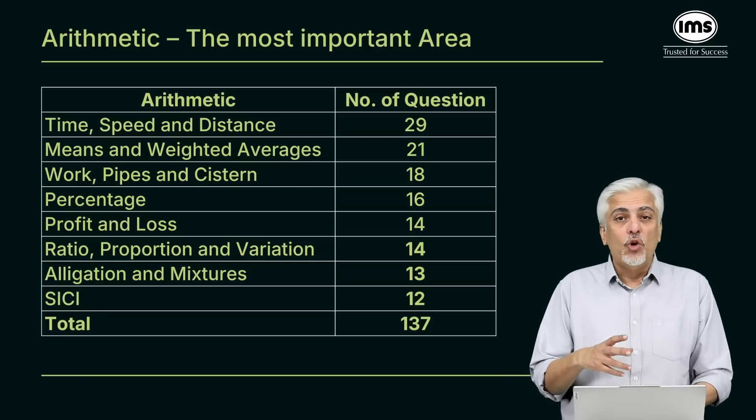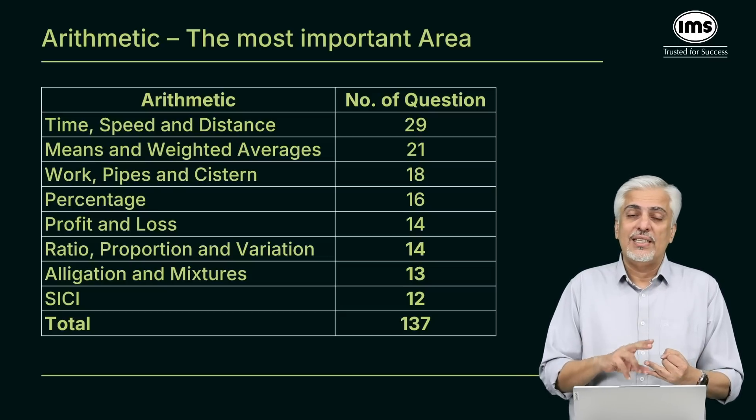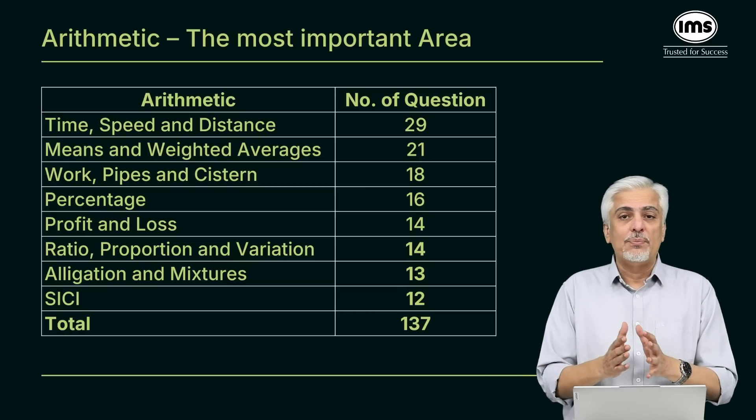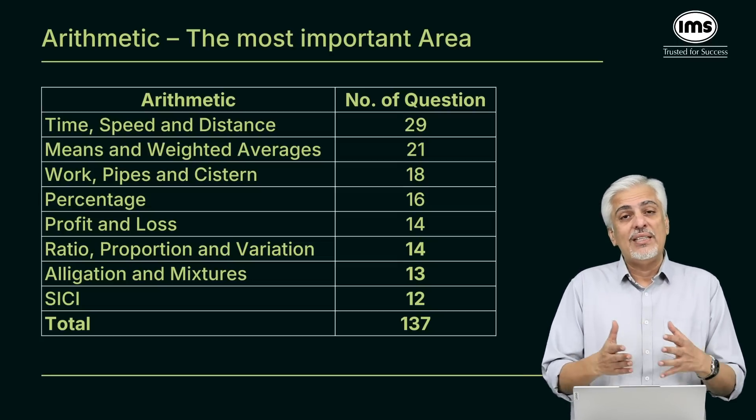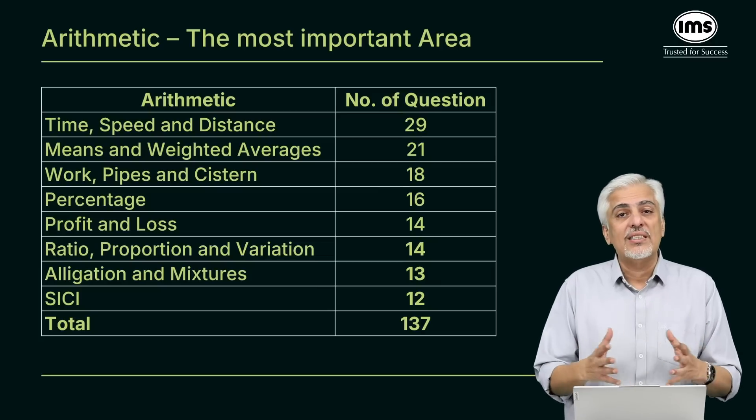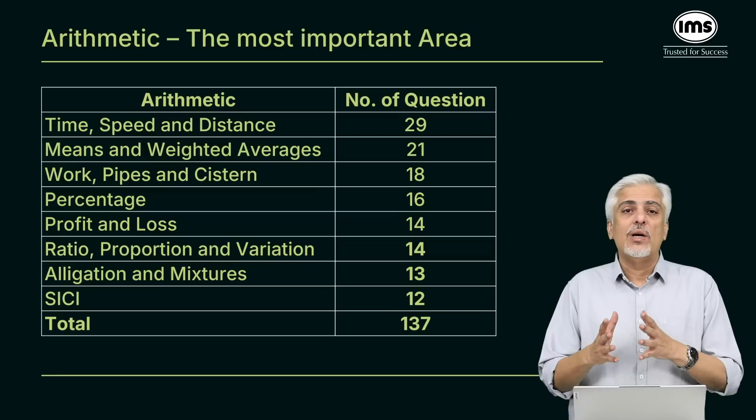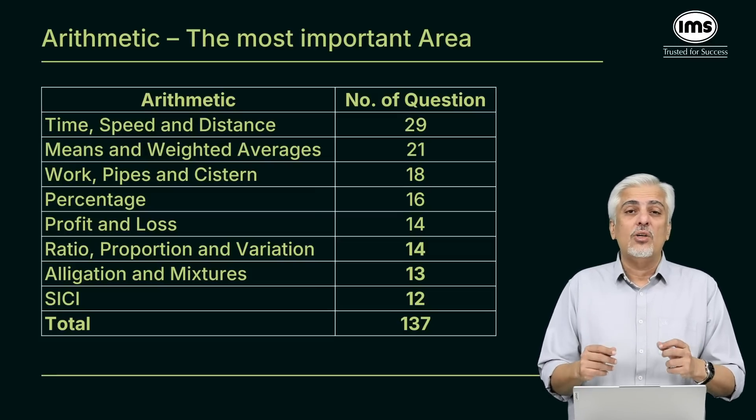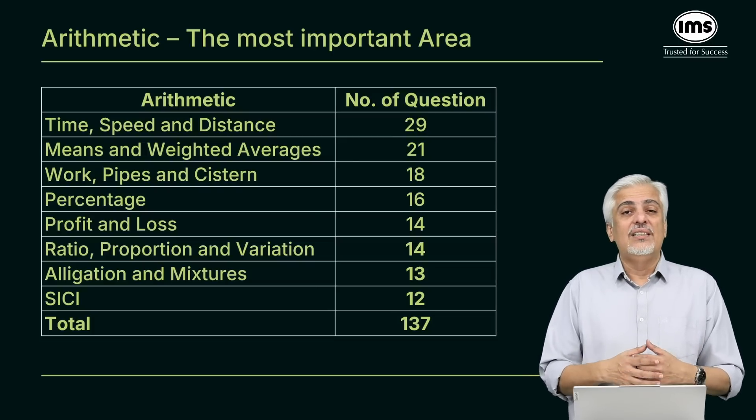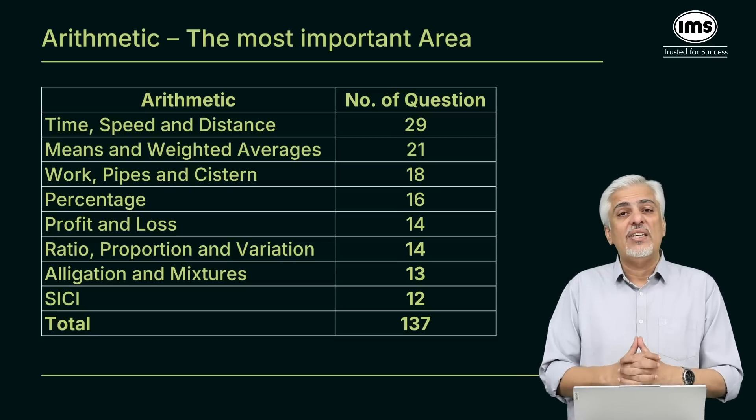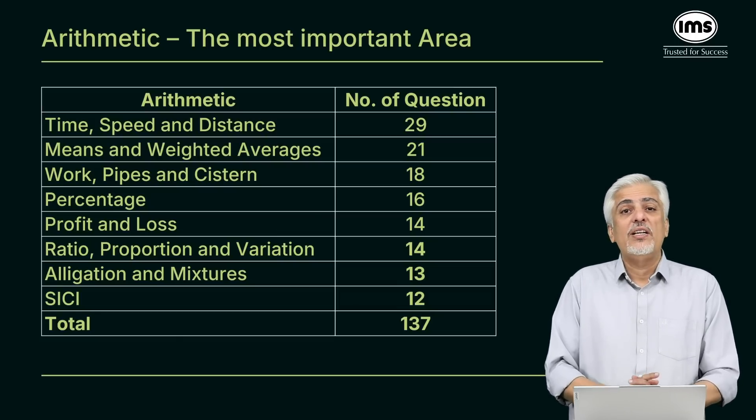I know some students have this phobia for time speed distance. There are a lot of different conceptual questions, questions on escalators, questions on upstream downstream, two people starting from different points and meeting at a point then going back. That concept, in fact a particular concept has been asked in the last three years four or five times in different slots, which is the concept of after meeting and going back in a certain number of hours, where the concept is speed one upon speed two equals square root of t2 upon t1. Also concept on escalators, sometimes races, number of meeting points and so on. Time speed distance becomes very important. Lot of level A and level B questions are there.